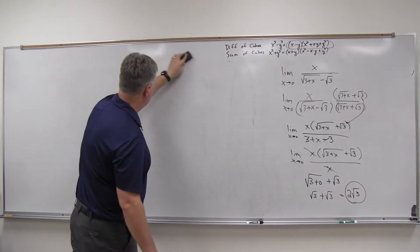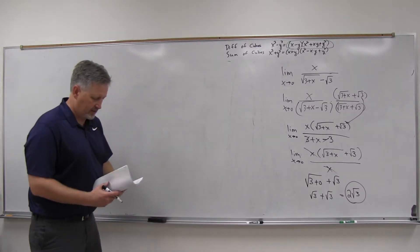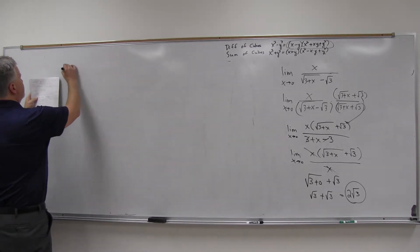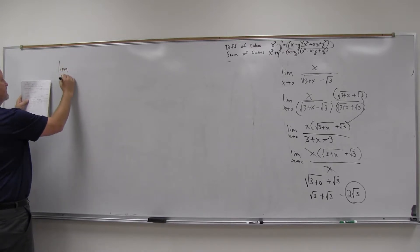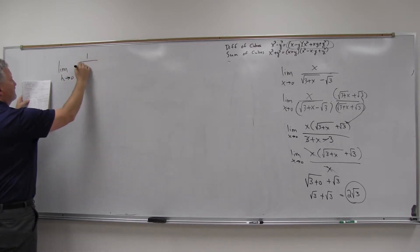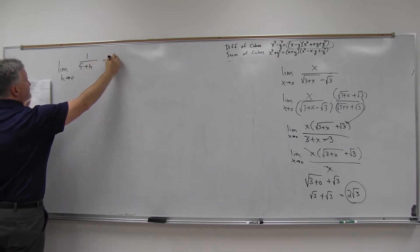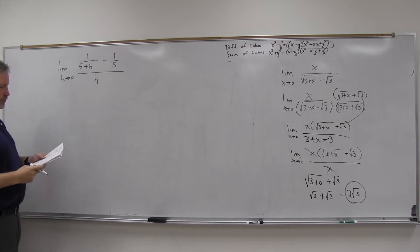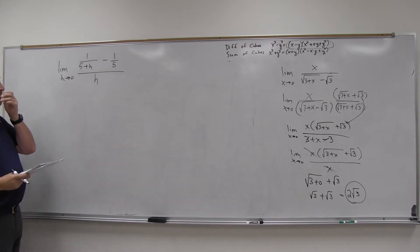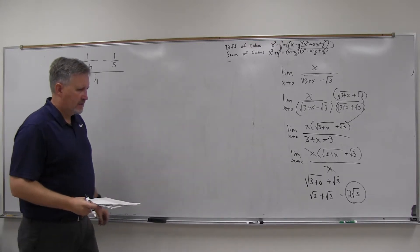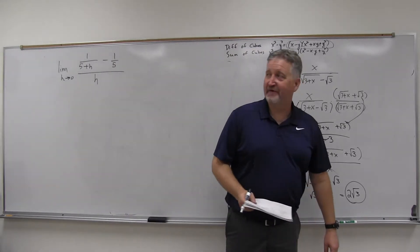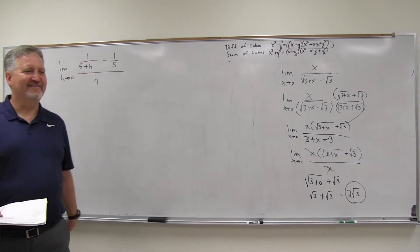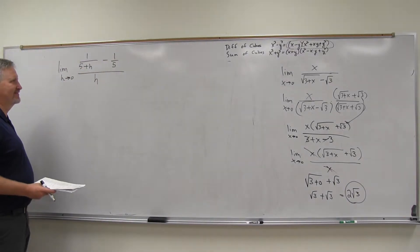One other technique. I've got the limit as h approaches zero of one over five plus h minus one over five, all over h. One fifth minus one fifth over zero — that's still zero over zero. It's usually going to be zero over zero for this section.